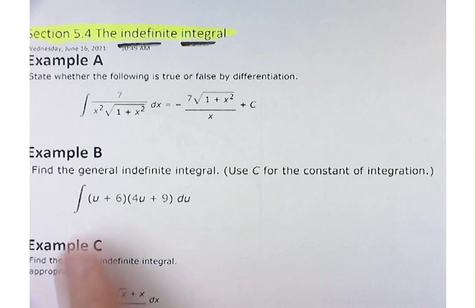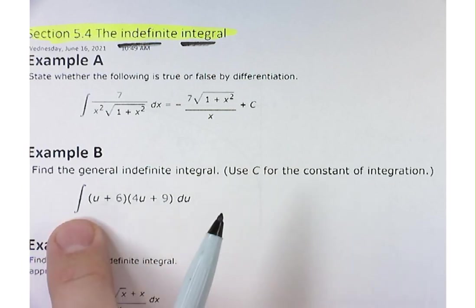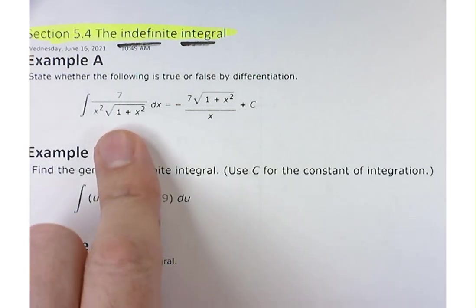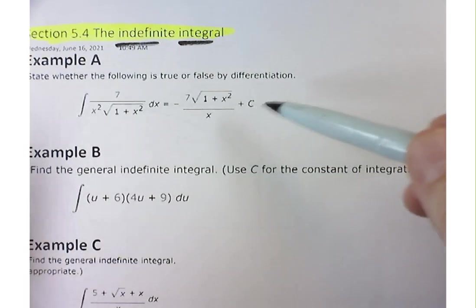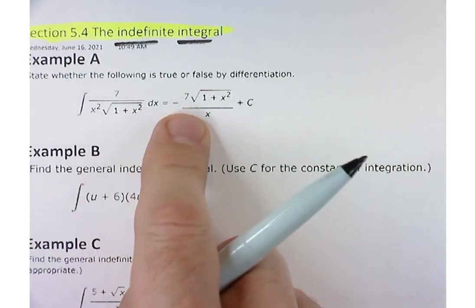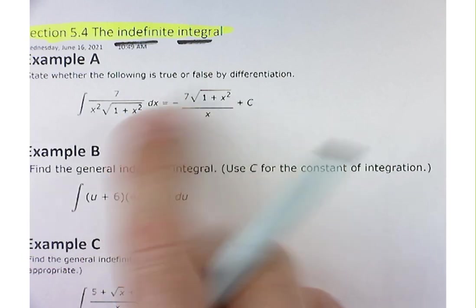Basically, this is saying define the antiderivative of this. That's what you're asked to do in these types of examples. Now, in the first example, and it's a lot of work that I'm not going to do here in this last few minutes of time, what you're being asked to do is to check this, check it as true or false by differentiating.